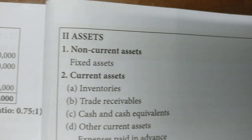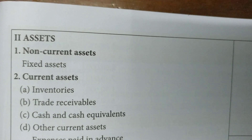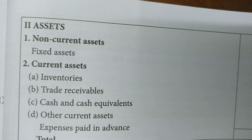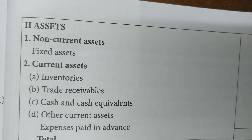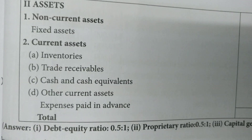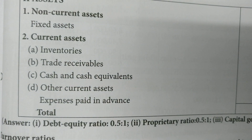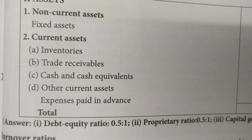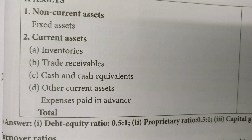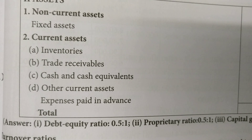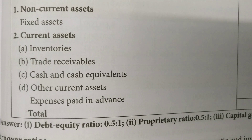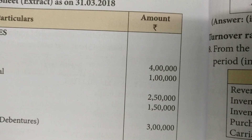Assets: non-current assets — fixed assets. Current assets: inventories, trade receivables, cash and cash equivalents, other current assets — expenses paid in advance. Total.